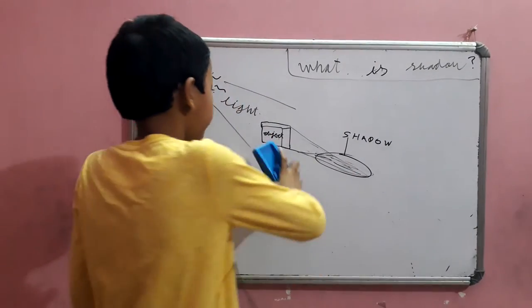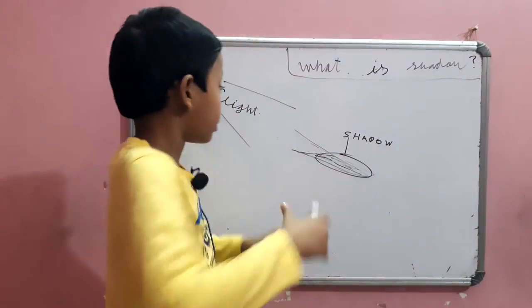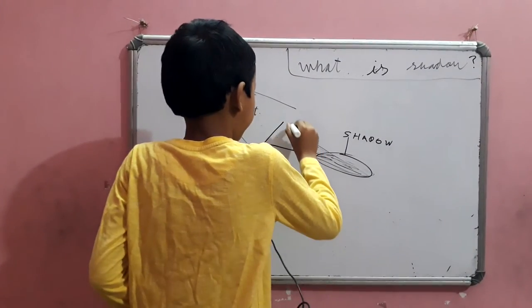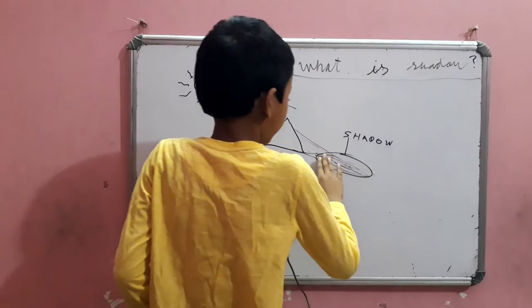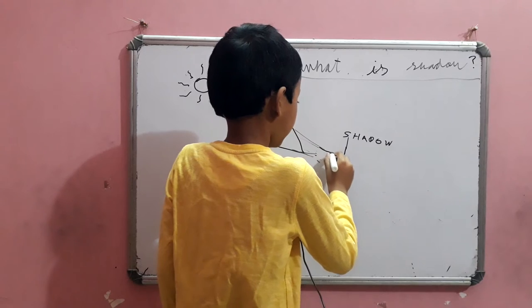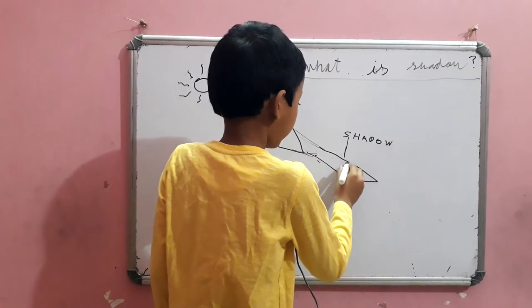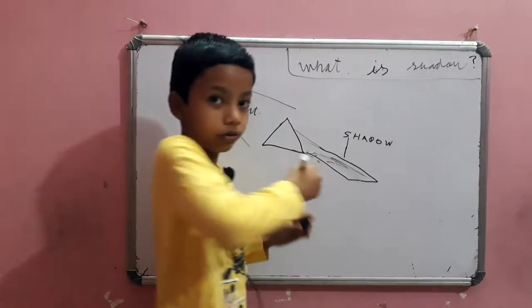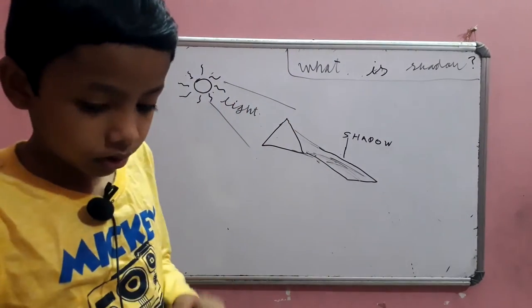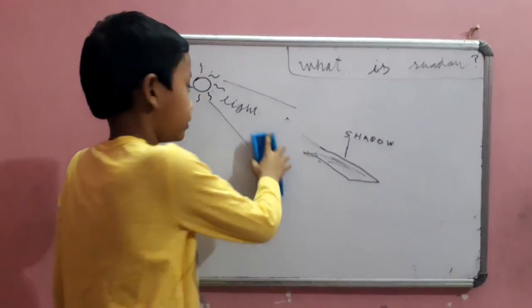You can use different shapes. It will create different shapes when you put a different object, like a triangle or a rectangle.